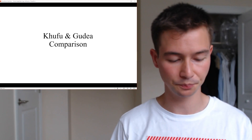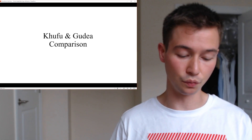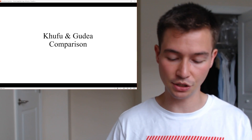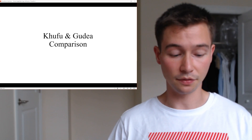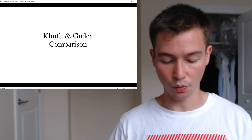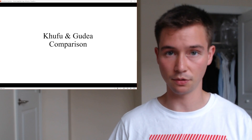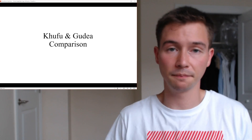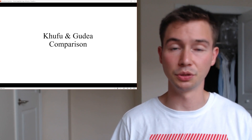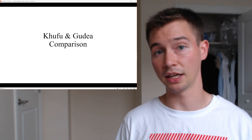In terms of political structure: Khufu ruled over a highly centralized state with a complex administrative structure of viziers, governors, and officials responsible for various aspects of governance. Gudea's rule was confined to the city-state of Lagash, exercising authority over local officials. The Mesopotamian city-states operated within a more decentralized political framework compared to the centralized rule of the Egyptian pharaohs. This relative lack of centralization may have contributed to Lagash's decline — the Old Kingdom itself declined partly due to a decrease in centralization, and Lagash never had the same level Khufu maintained.